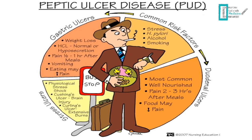First of all, let's talk about the definition of the peptic ulcer. A peptic ulcer is a break in the superficial epithelial cells penetrating into the muscularis mucosa of the stomach or the duodenum. We have two main types of peptic ulcer disease: the duodenal ulcer and the gastric ulcer.